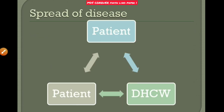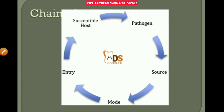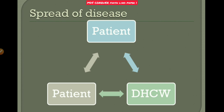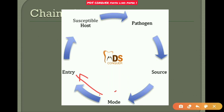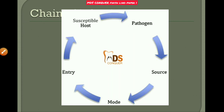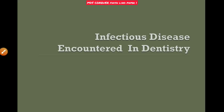Spread of disease may be patient to patient, patient to health worker, or health worker to patient. If a susceptible host is present, the pathogen from the source will find a mode of entry — this is the cycle of how a pathogen enters a susceptible host.